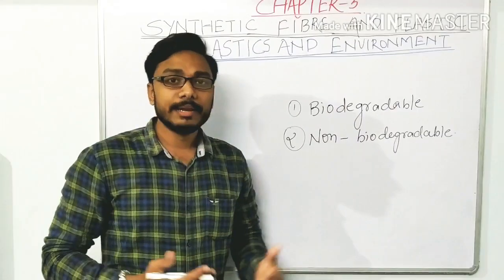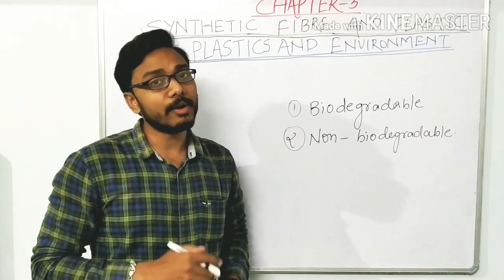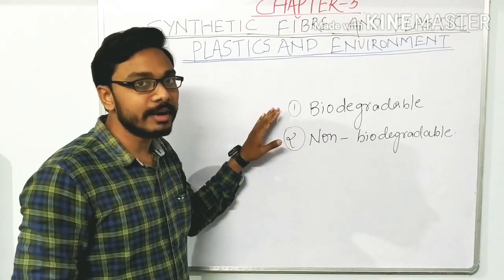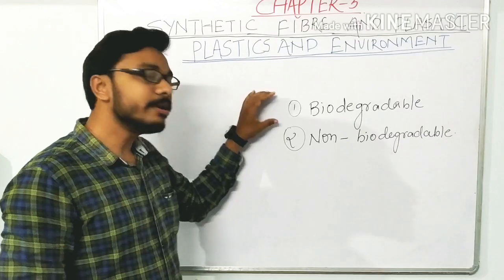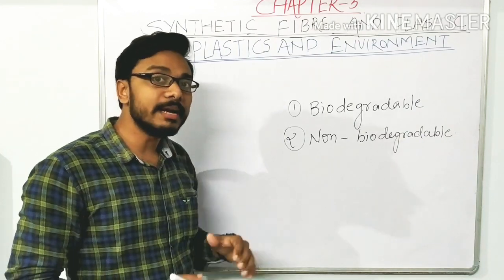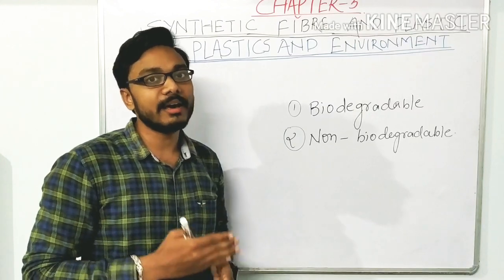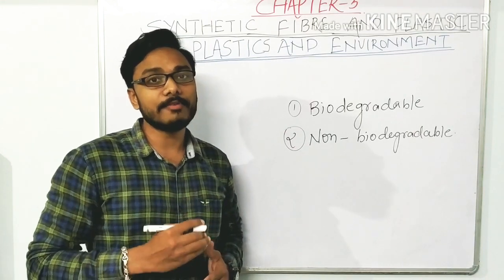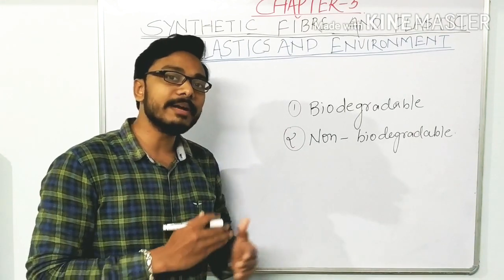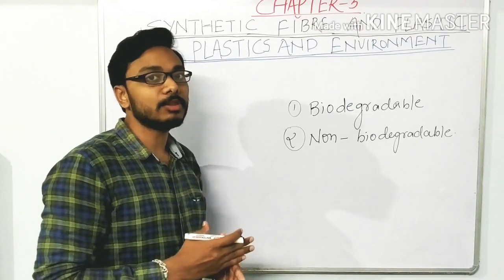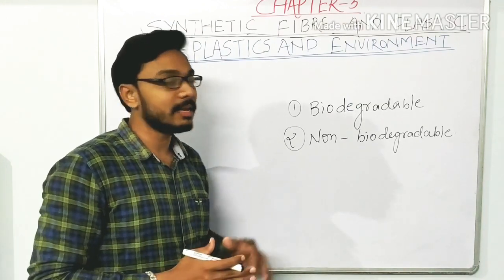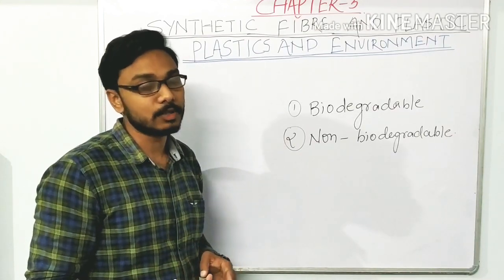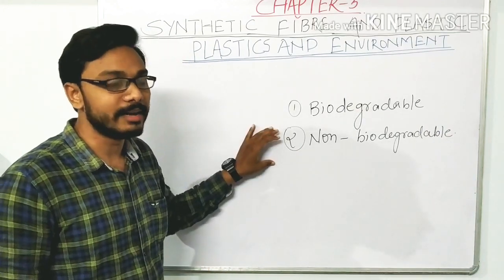Now we will see the categories of material according to their decomposing property. There are two categories: biodegradable and non-biodegradable. Biodegradable materials can be decomposed by natural things like air, water, and soil. For example, cotton or vegetable waste thrown in soil can decompose after some time.